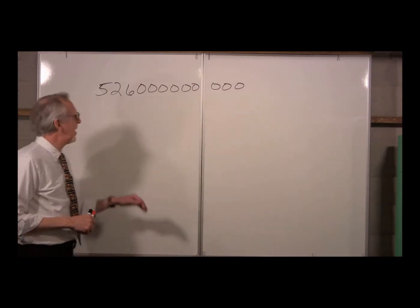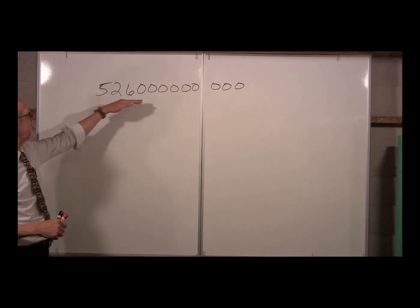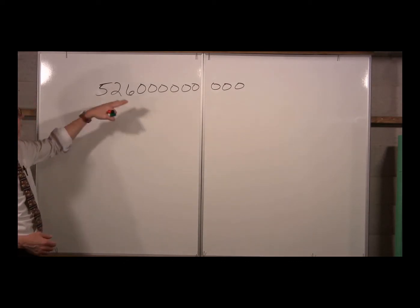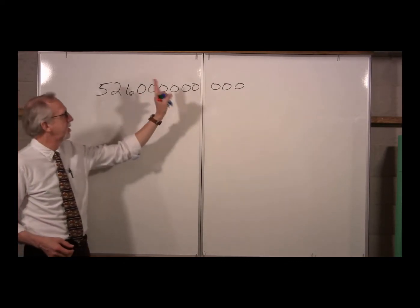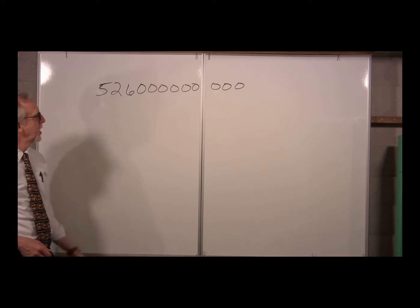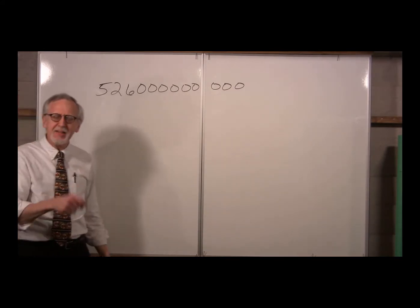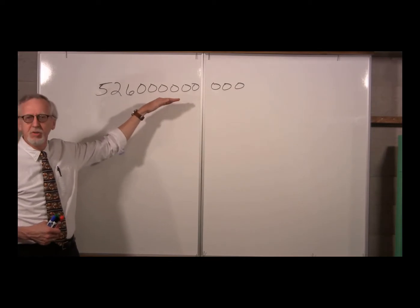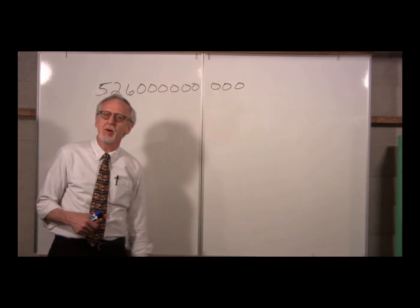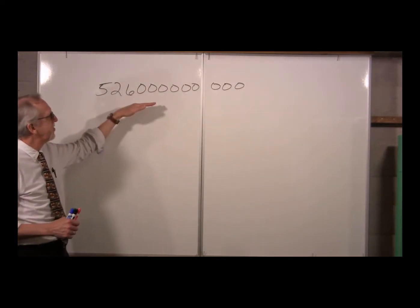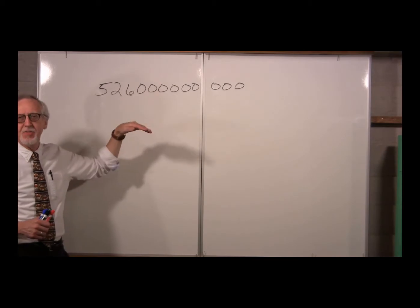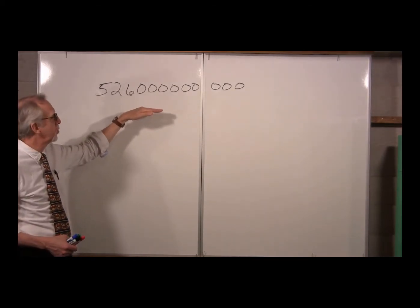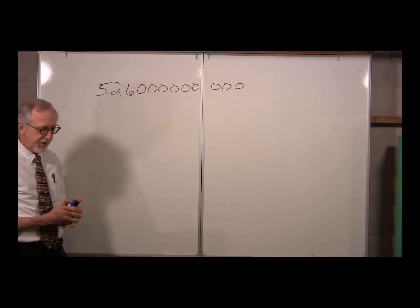Let's imagine we've got some very large number that has come from some calculation - 5, 2, 6, followed by a bunch of zeros. If you keep trying to write this down, it's very likely that you might accidentally lose a zero or write an extra zero. So there's a very nice method of writing large numbers, and also small numbers, using scientific notation.